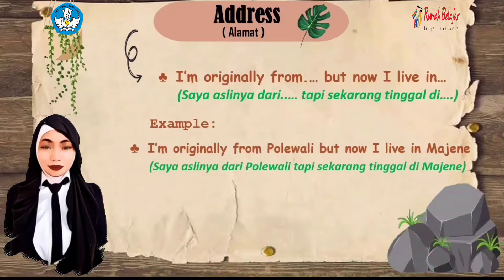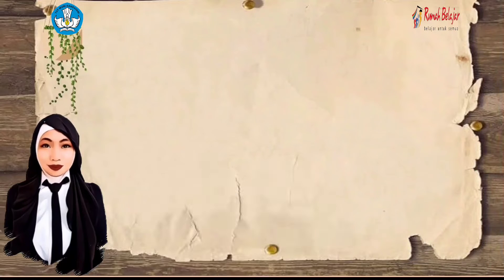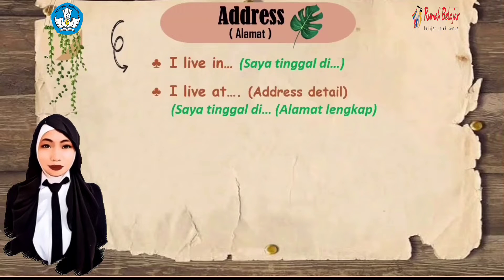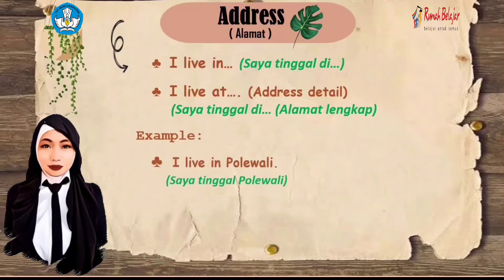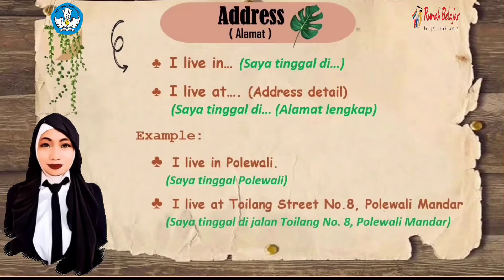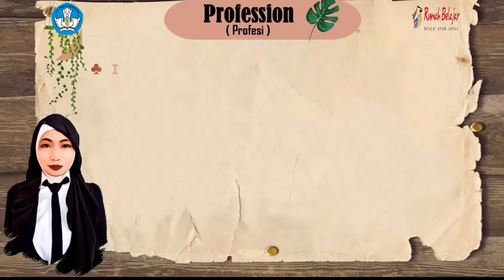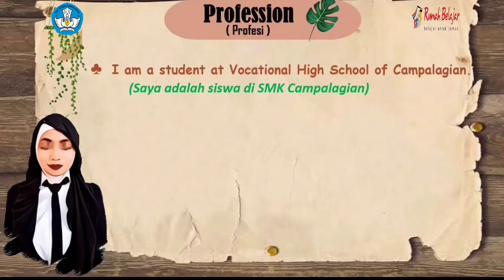For example: 'I'm originally from Polawali but now I live in Majene.' You can also say: 'I live in [place]' or 'I live at [full address].' When using 'at,' you need to include a complete address. For example: 'I live in Polawali' or 'I live at Toilam Street no. 8, Polawali Mandar.'